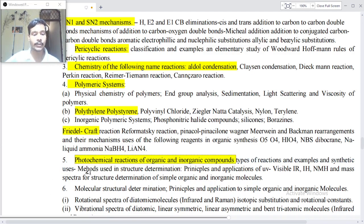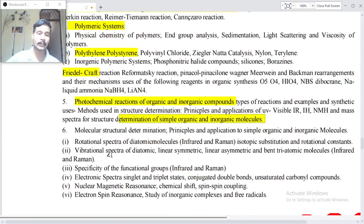Methods used in structure determination, principles and applications of UV-Visible, IR, NMR and mass spectra for structure determination of simple organic and inorganic molecules. Point number six: Molecular structure determination, principles and application to simple organic and inorganic molecules, rotational spectra of diatomic molecules and infrared and Raman, isotopic substitutions and rotation constant, vibration spectra of diatomic, linear, symmetric and asymmetric triatomic molecules, infrared and Raman.